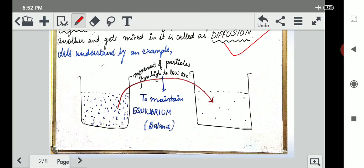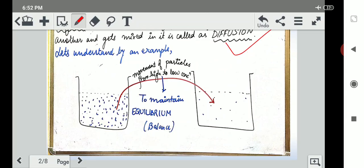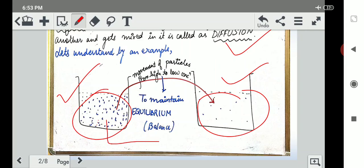Let's understand this with the help of an example. You can see that in this beaker there are a lot of particles present, while in this beaker there are comparatively lesser particles present. So what happens is that these substances have a tendency to move this side just in order to maintain a balance and that balance is called equilibrium.